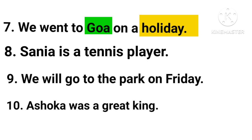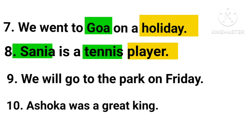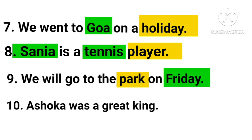Next sentence: 'Sanya is a tennis player.' There are three nouns: Sanya, tennis, and player. Sanya and tennis are proper nouns; player is a common noun. 'We will go to the park on Friday.' There are two nouns: park and Friday. Park is a common noun and Friday is a proper noun. Next sentence: 'Ashoka was a great king.' Ashoka is a proper noun and king is a common noun.